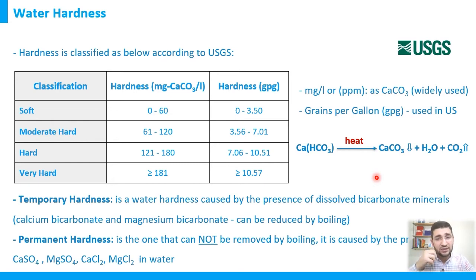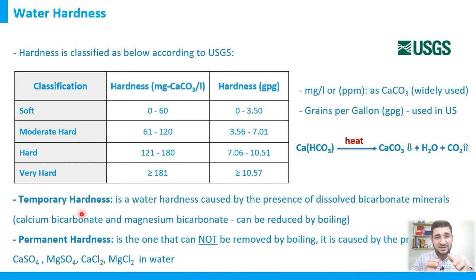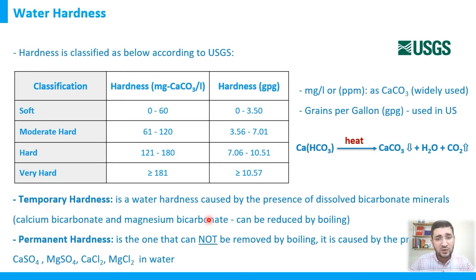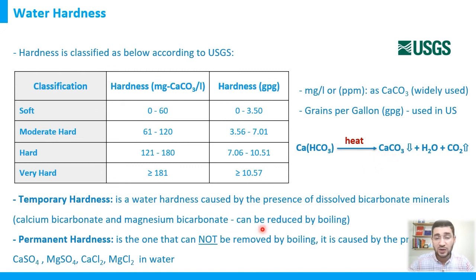There is an important distinction between temporary hardness and permanent hardness. Temporary hardness is related to calcium bicarbonate and can be removed by boiling — when boiled, it forms calcium carbonate precipitate, which is why it's called 'temporary.' On the other side, permanent hardness cannot be removed by boiling.